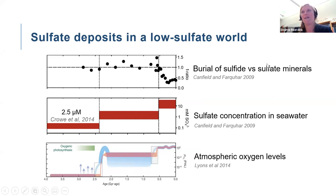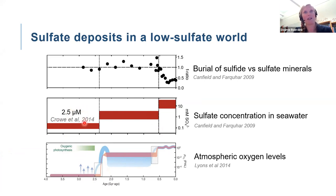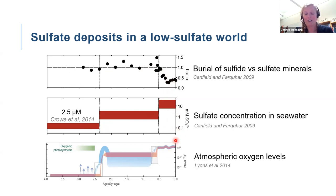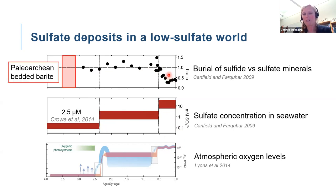Throughout the rock record, the abundance of sulfate deposits reflects redox conditions on Earth's surface. Under low atmospheric oxygen, as in the Archaean, seawater sulfate concentrations are also low because oxidative weathering is absent as a sulfate source. Therefore sulfur is primarily buried as sulfide rather than sulfate. Only when oxygen levels and seawater sulfate concentrations reached modern levels does sulfate become abundant in the rock record.